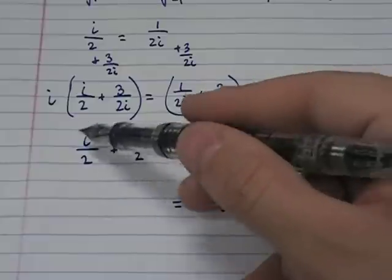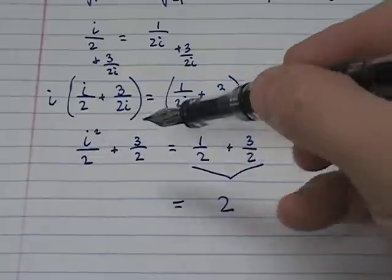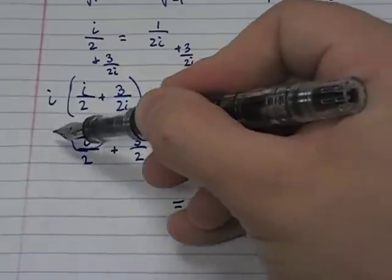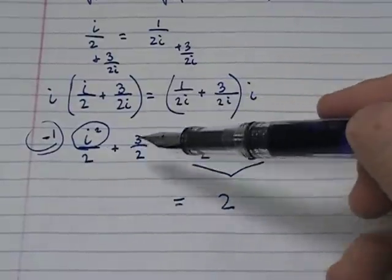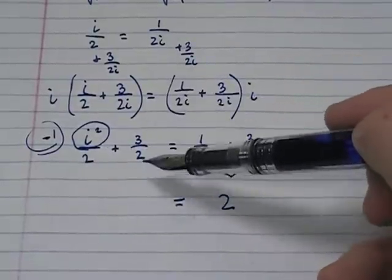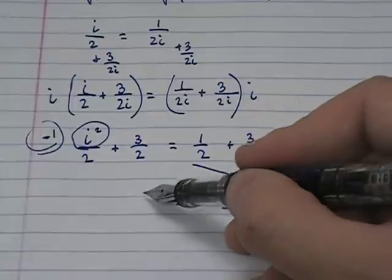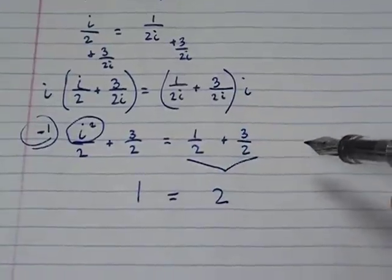And what do we know about i²? Well, i² is -1, right? i² is the same as -1. So what's -1/2 + 3/2? Well, 3/2 - 1/2 is 2/2. Well, 2/2 is 1. And so what do you get?